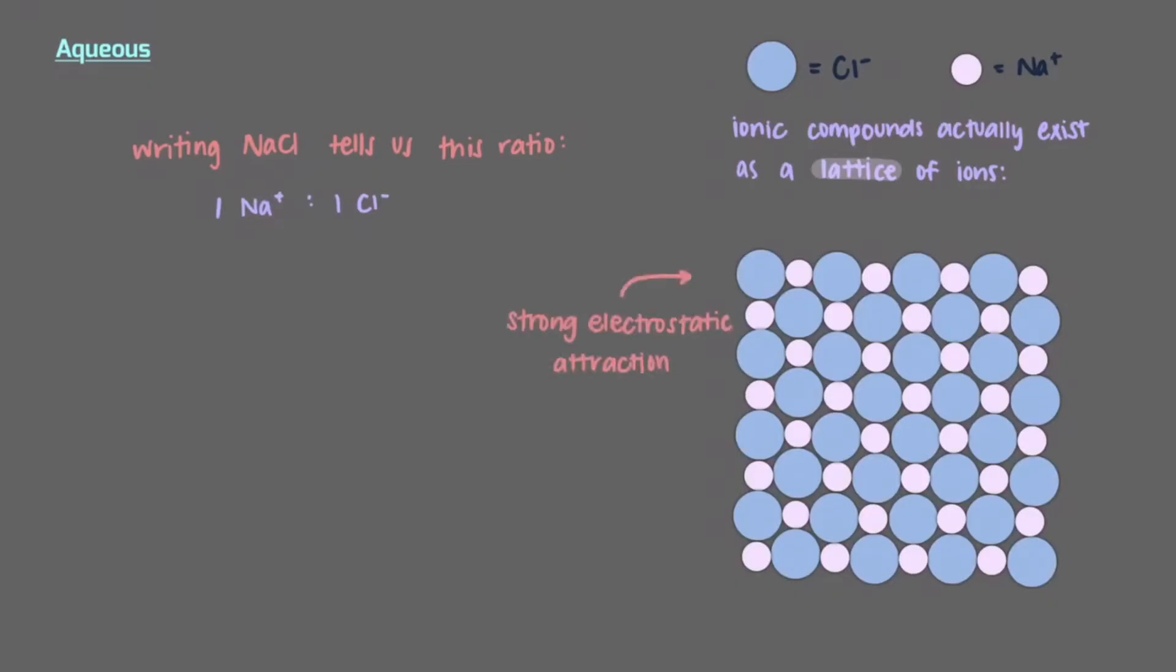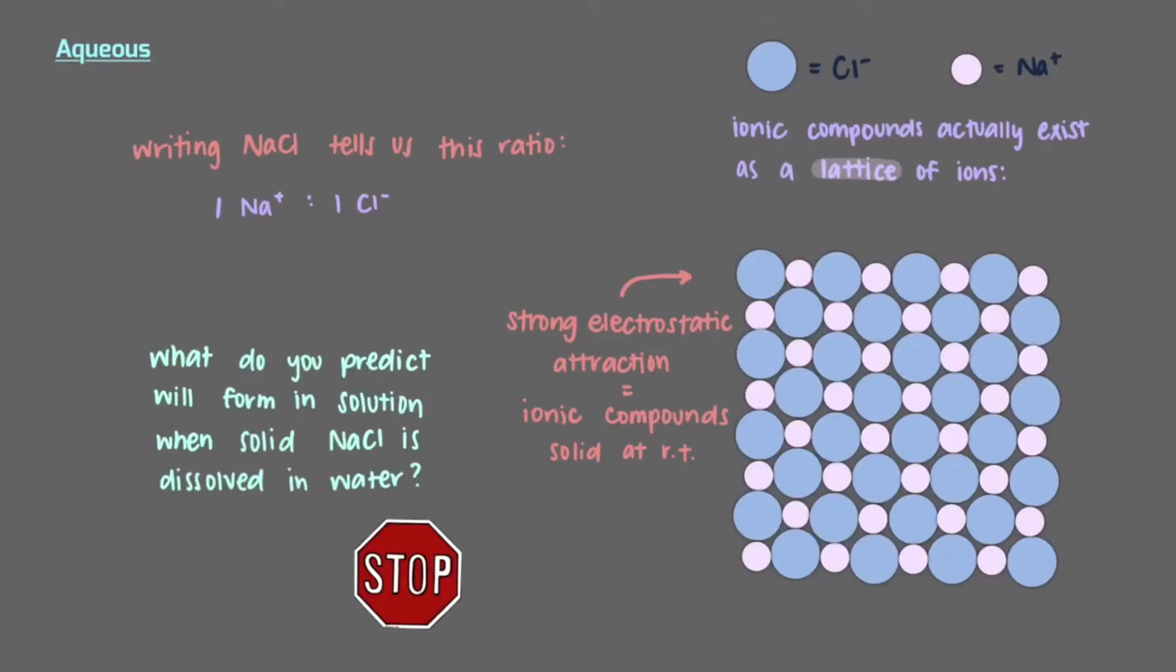Because the electrostatic attraction between ions to form ionic compounds is so strong, ionic compounds are solid at room temperature. But what happens when we put a solid ionic compound in water? What do you predict will form in solution when solid sodium chloride is dissolved in water?